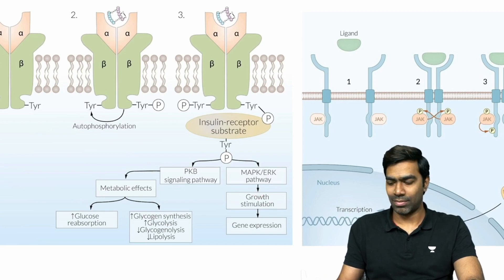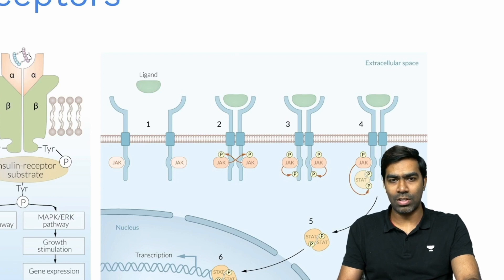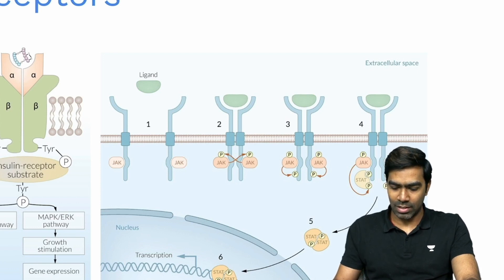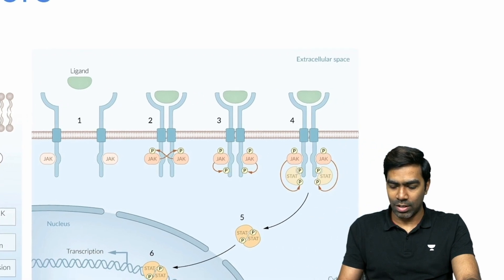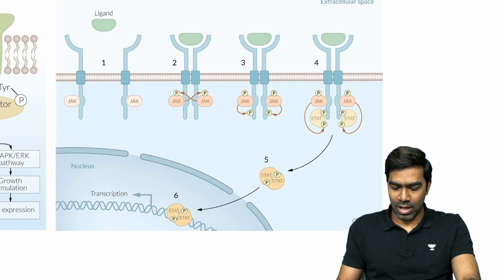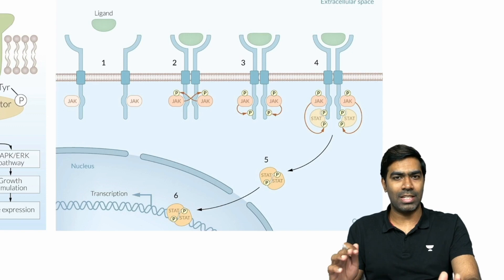Signaling via the MAP kinase and ERK pathway results in growth stimulation and increased genetic expression. For the JAK-STAT pathway (NRTK), the receptors are not dimers initially. Once the ligand binds, they dimerize and undergo autophosphorylation of the Janus kinases. Activated JAKs then phosphorylate STAT proteins, causing STAT dimerization. The STAT dimer translocates to the nucleus, binds specific nuclear domains, and activates or inhibits transcription of certain genes.